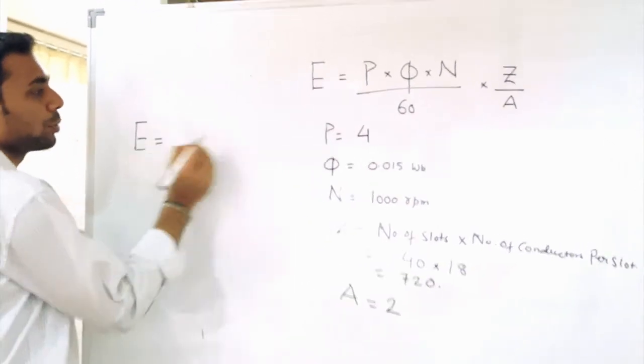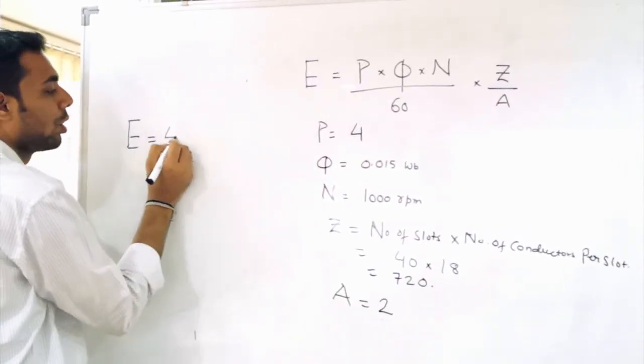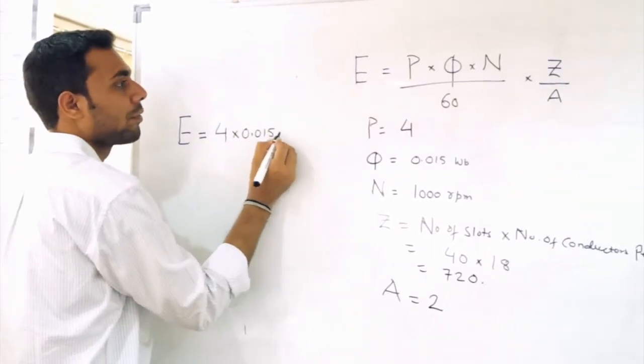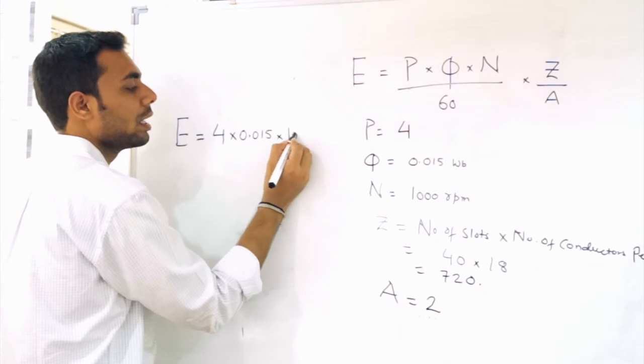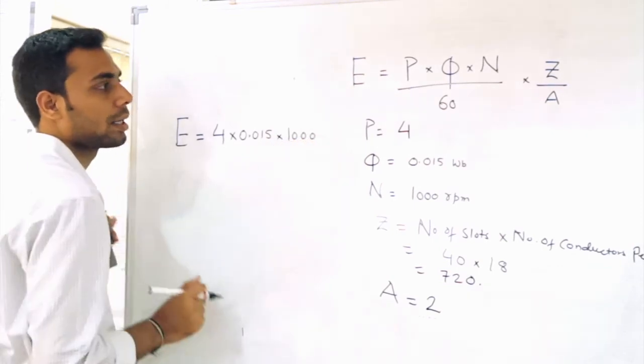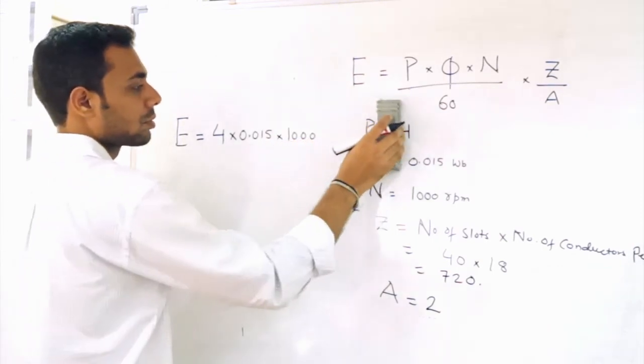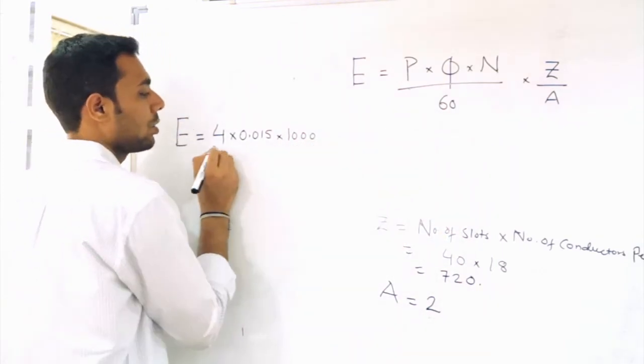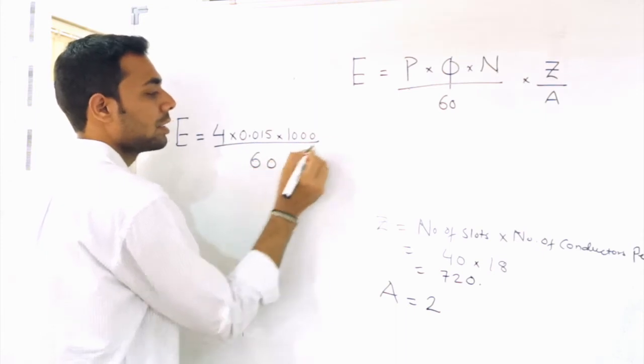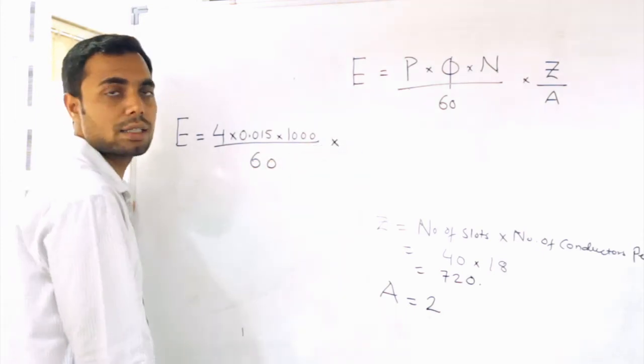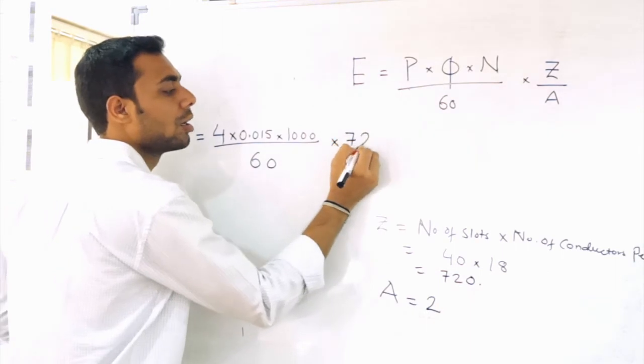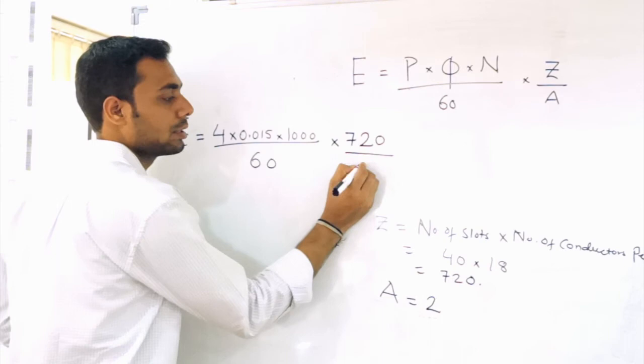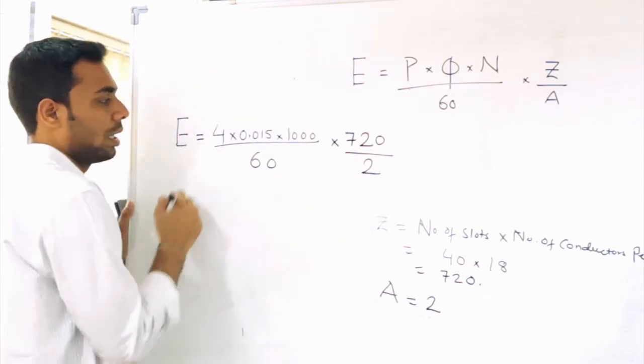E equal to P, P is 4. What is phi? 0.015. What is N? It is 1000. So this divided by 60. What is Z? 720. And what is A? It is equal to 2. Let's solve this problem. What will be the value?